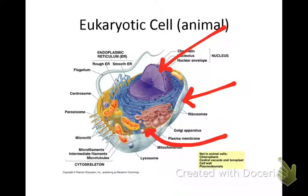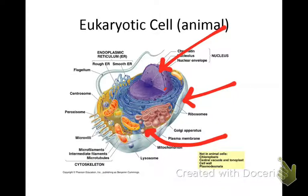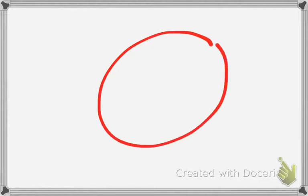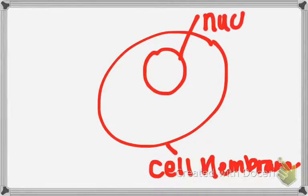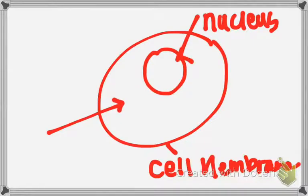Let's start with the cell membrane — that's the outside. Now, some cells have a cell wall on the outside of the cell membrane, but all cells have a cell membrane. That cell membrane is going to allow certain food or water in and certain waste out. The nucleus is where the DNA is — you can see the purple right there. Go ahead and draw this out beside that first part on your notes.